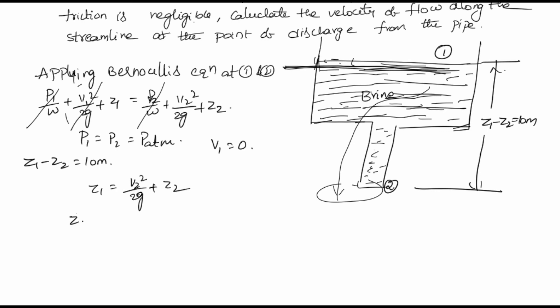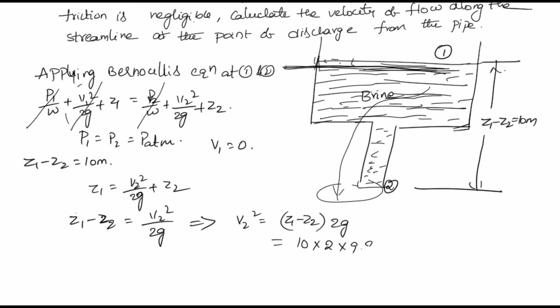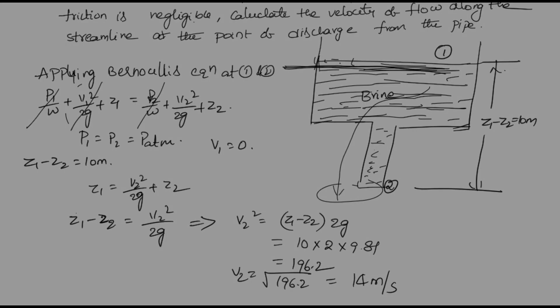Therefore v2² = (z1 - z2) × 2g = 10 × 2 × 9.81 = 196.2. So v2 = √196.2 = 14 meters per second. This is the velocity at section 2, found using Bernoulli's equation applied at the two sections. This is one example of applying Bernoulli's equation.